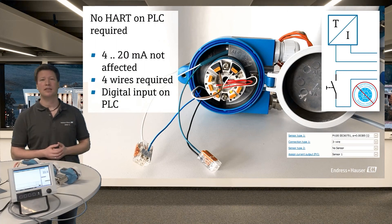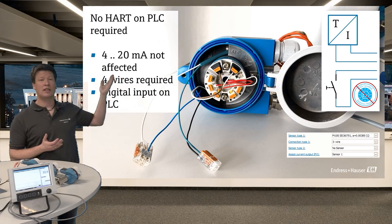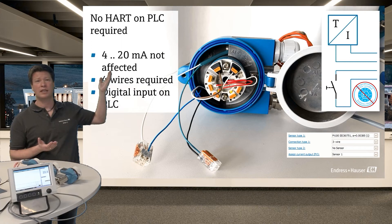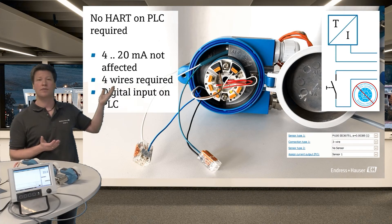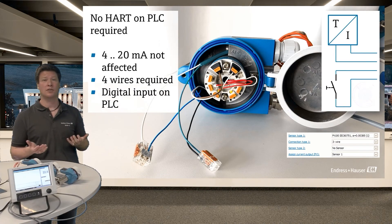Benefits in this case means that no HART signal needs to be detected on the PLC. We still have the temperature signal, 4 to 20 milliamp loop is not affected, but you need four wires to the transmitter. And then you have a digital signal on the PLC to evaluate the error.